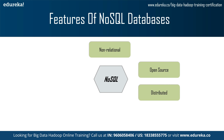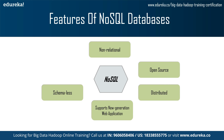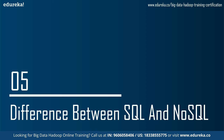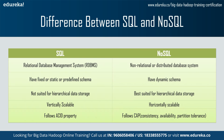NoSQL databases follow shared-nothing architecture, which enables less coordination and higher distribution. They are non-relational and offer heterogeneous structures of data in the same domain, which supports new generation web applications. NoSQL databases are either schema-free or have relaxed schemas and do not require any definition of the schema of the data. They offer easy-to-use interfaces for storage and querying data, and APIs allow low-level data manipulation and selection methods.